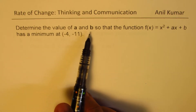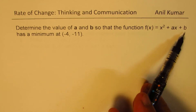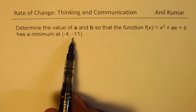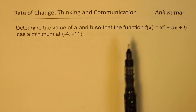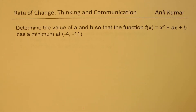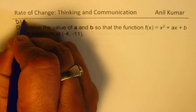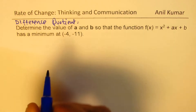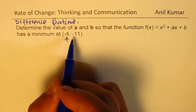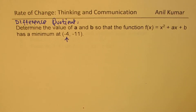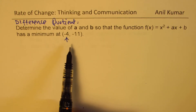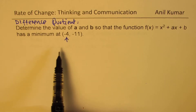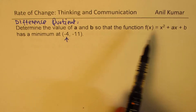Determine the value of a and b so that the function f of x equals x squared plus ax plus b has a minimum at (minus 4, minus 11). You can solve this using two methods: the difference quotient method, or by directly using the given minimum point minus 4. My recommendation is to use the difference quotient method first, then substitute minus 4 to find the answer.